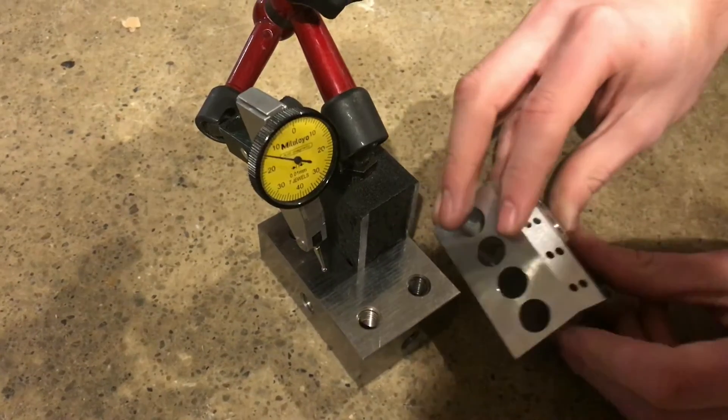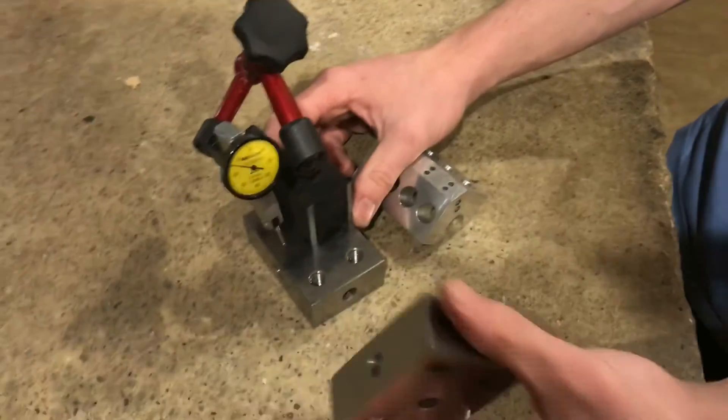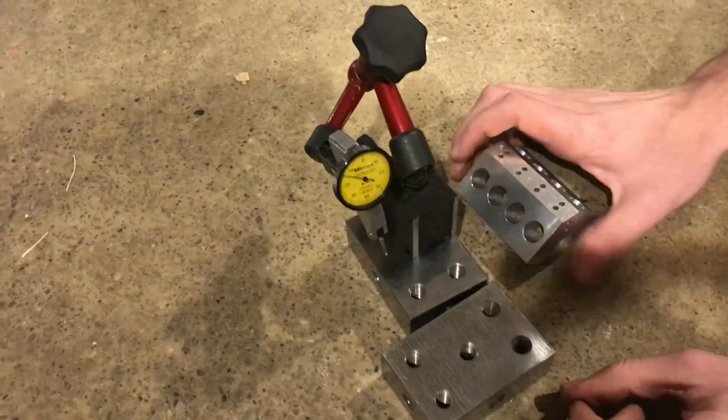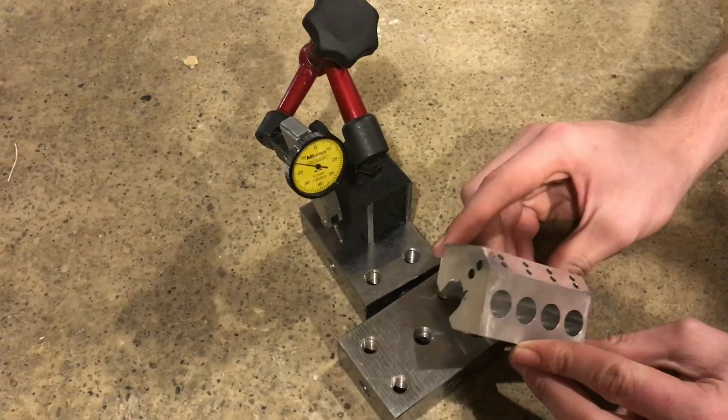But I think this is a really great method. You don't have to use anything too expensive, just these 1-2-3 blocks and your indicator, and you can check any of your parts for parallelism and perpendicularity.